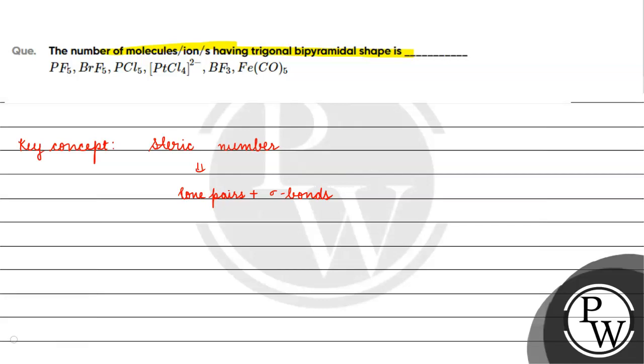What is given to us? PF5, BrF5, PCl5, PtCl4 2 negative, BF3, and FeCO5.